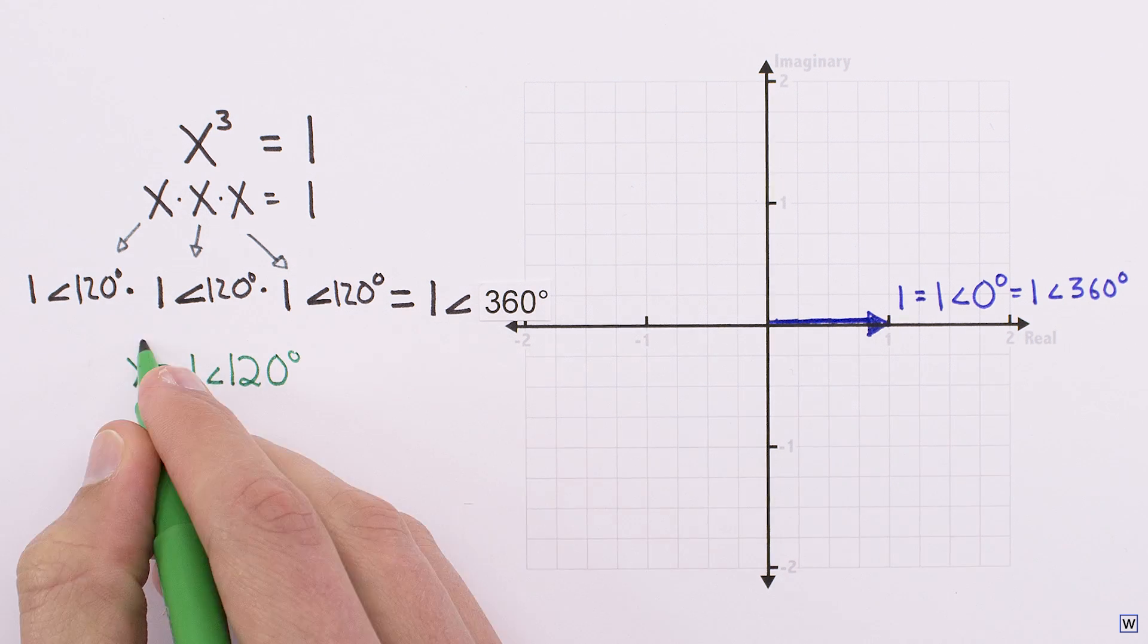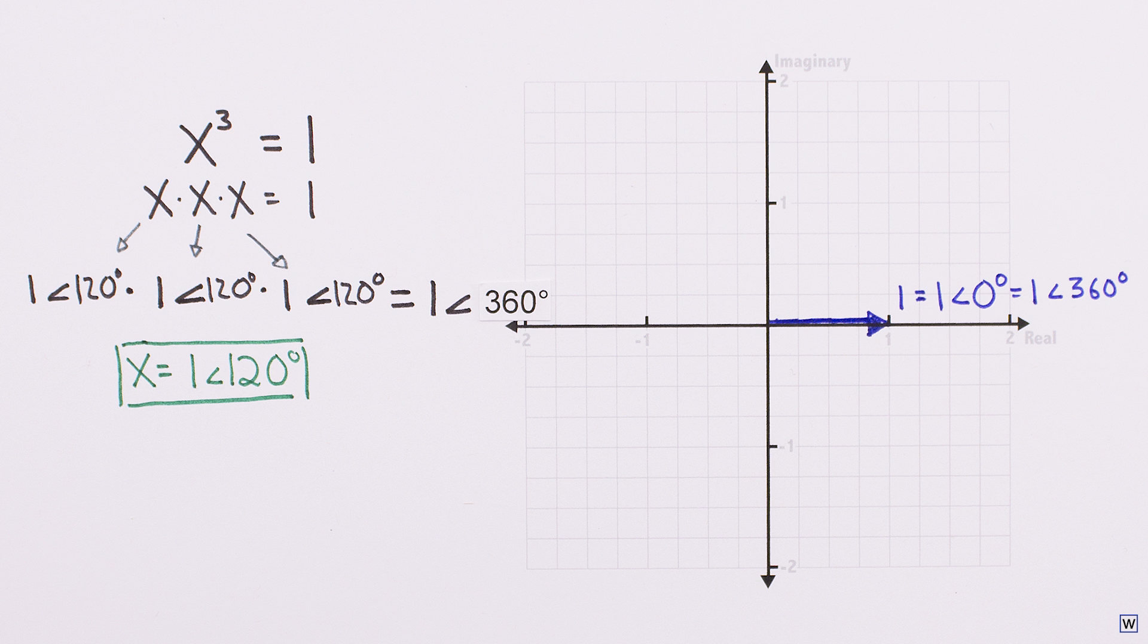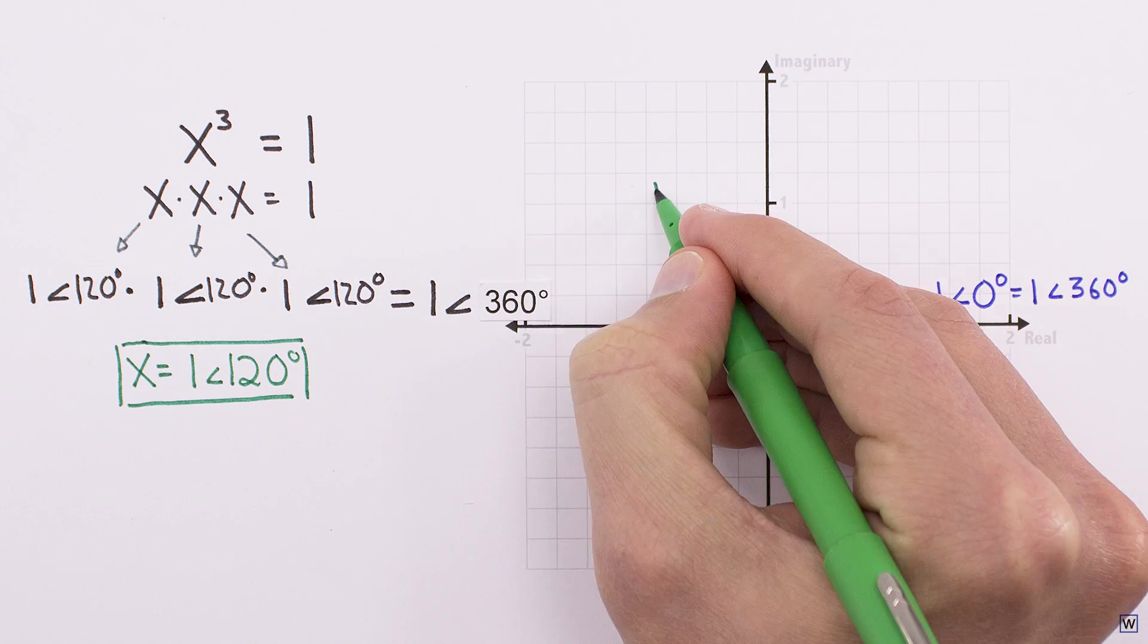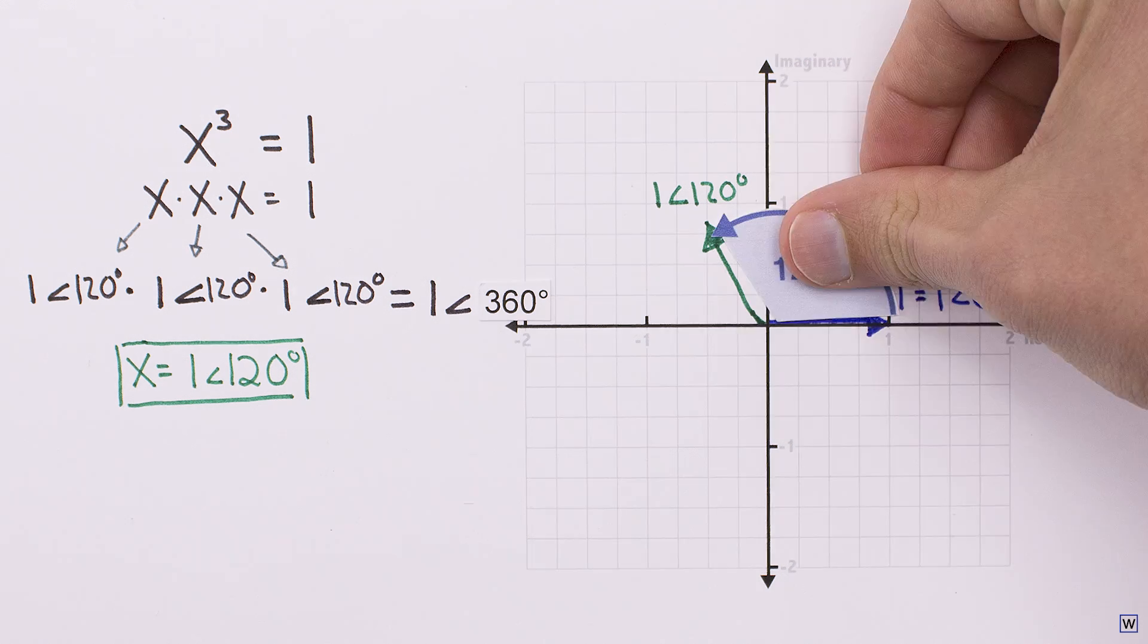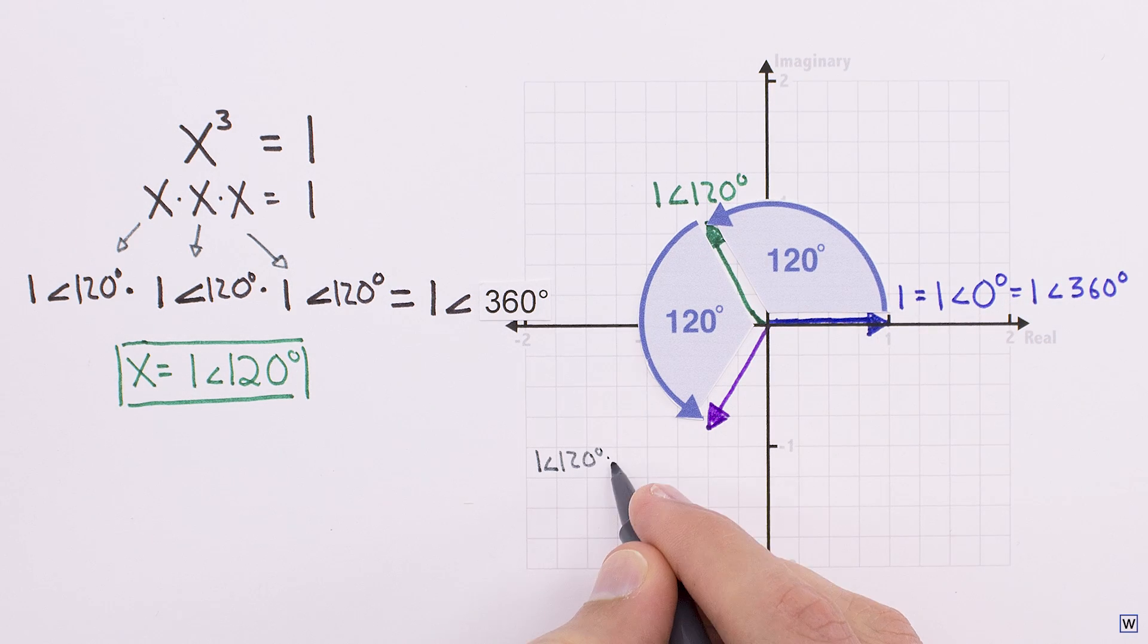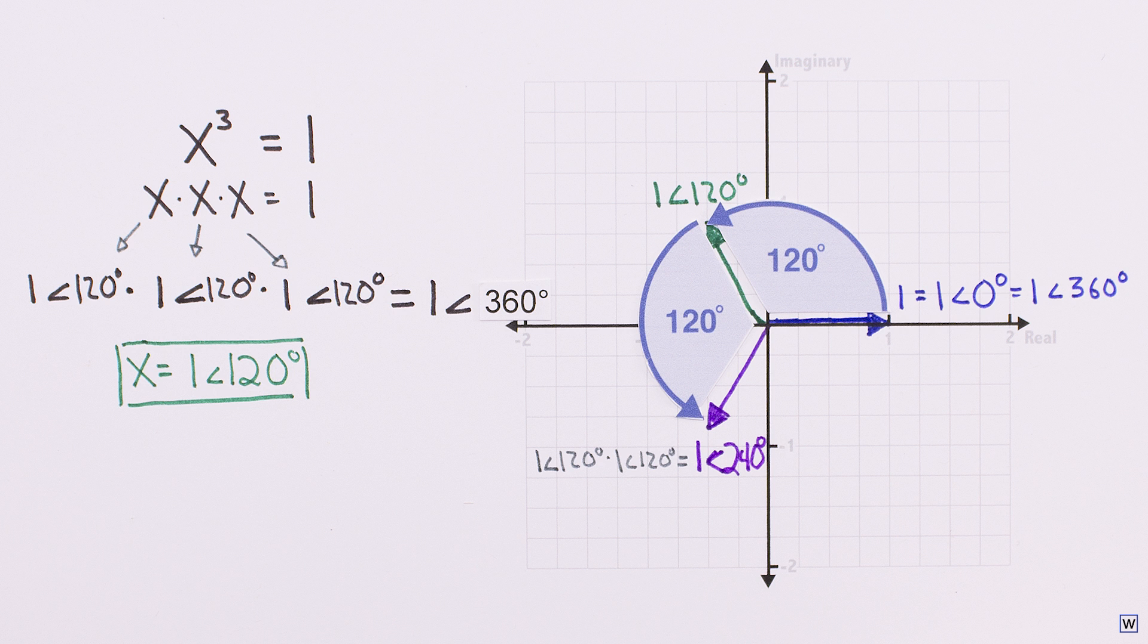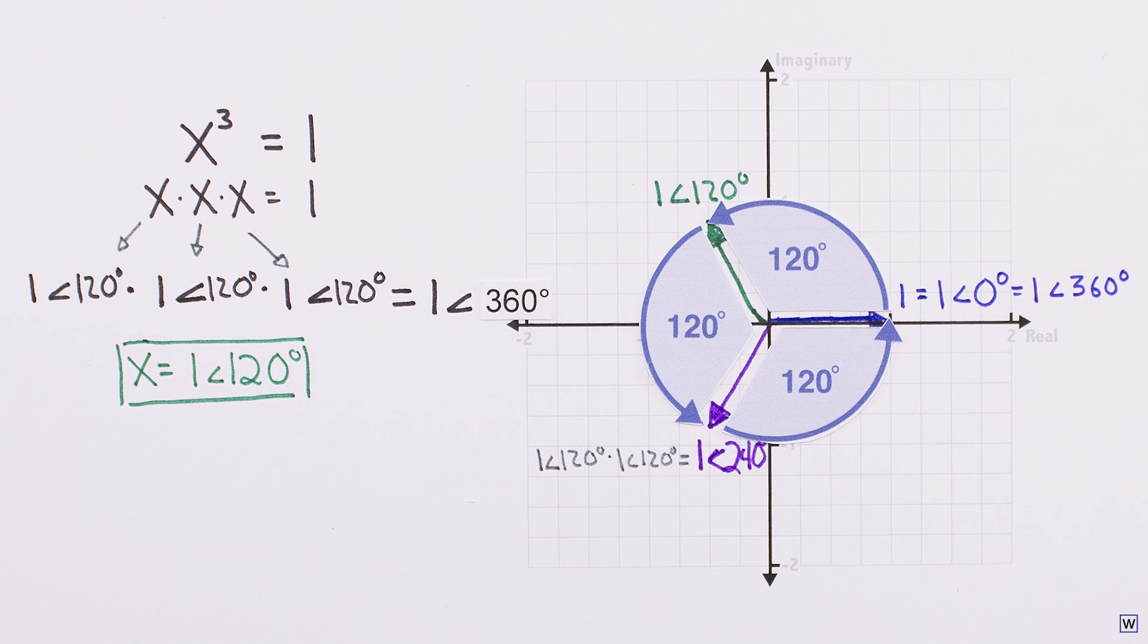It's the complex number with a magnitude of 1 and an angle of 120. This answer makes a lot of sense on the complex plane. Multiplying our answer by itself once results in a magnitude of 1 at an angle of 240 degrees. And multiplying by our answer again lands us exactly where we want it to be, at a magnitude of 1 and an angle of 360 degrees, also known as the real number 1.